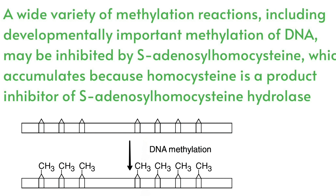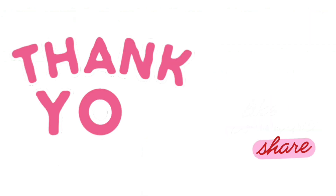Accumulated homocysteine inhibits S-adenosyl homocysteine hydrolase, resulting in the accumulation of S-adenosyl homocysteine. This accumulated S-adenosyl homocysteine can inhibit a wide range of methylation processes, including the developmentally significant methylation of DNA.